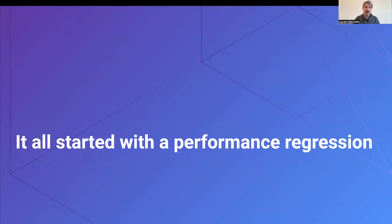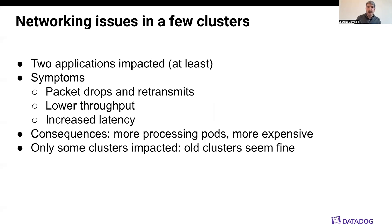The issue I'm going to discuss today started with a performance regression. Two teams reached out to us saying they were having networking issues on a few clusters. The symptoms were packet drops and retransmits, which impacted throughput and latency. As a consequence, they had to create more processing pods, and of course, it was more expensive.